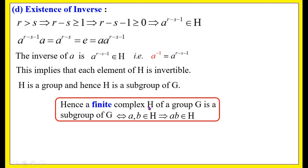Hence the theorem: a finite complex H of a group G is a subgroup of G if and only if a, b ∈ H implies a·b ∈ H. So hereafter, if you want to prove a finite subset of a group G to be a subgroup of G, it is enough to verify only one axiom — namely the closure axiom: a, b ∈ H implies a·b ∈ H.